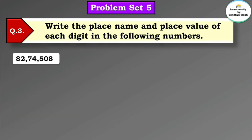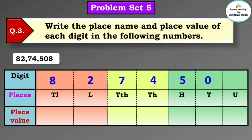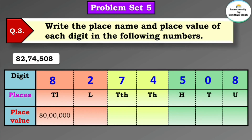Next number: 82,74,508. Let's arrange this number. 8 is in the 10 lakhs place so its place value is 80 lakh. 2's place value is 2 lakh. 7's place value is 70,000. 4's place value is 4,000. 5's place value is 500. 0's place value is 0. And 8's place value is 8.